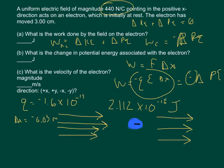Since work equals negative times the change in potential energy, the answer for part A is positive 2.112 times 10 to the negative 18th joules, and the answer for part B is just that number with a negative sign in front of it: negative 2.112 times 10 to the negative 18th joules.